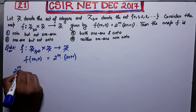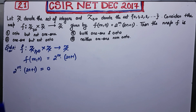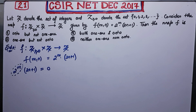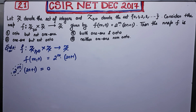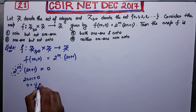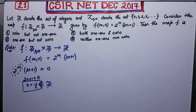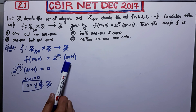Can this number be 0? Does there exist m or n such that f(m,n) = 0? Suppose this number is 0. Since 2 to the power m is never 0 for any value of m in z≥0, we need 2n + 1 = 0, which gives n = -1/2. But this n does not belong to z. Therefore, for no m, n does this number equal 0.